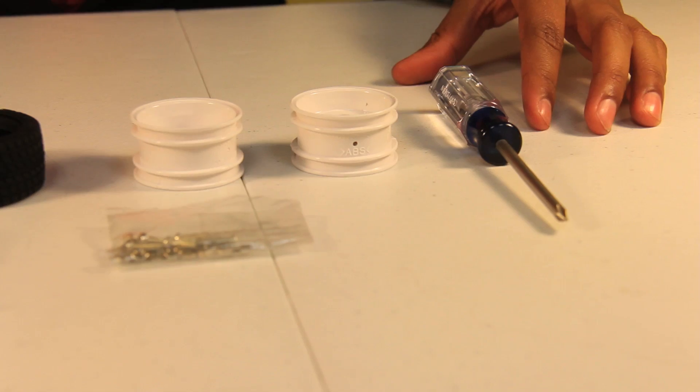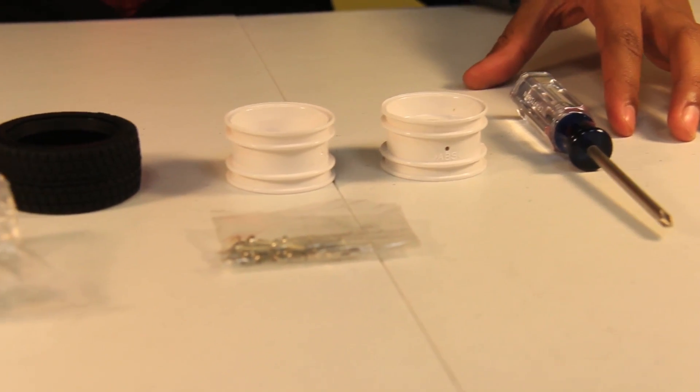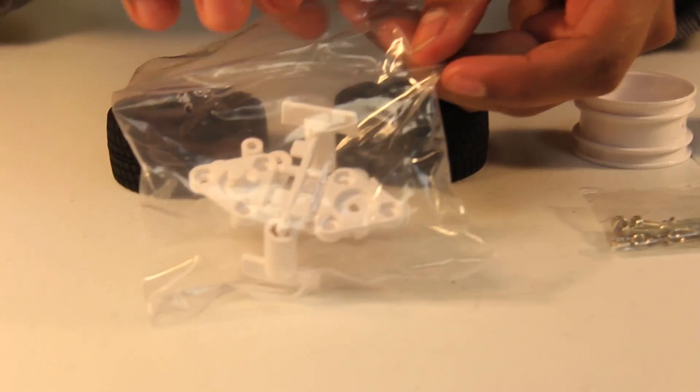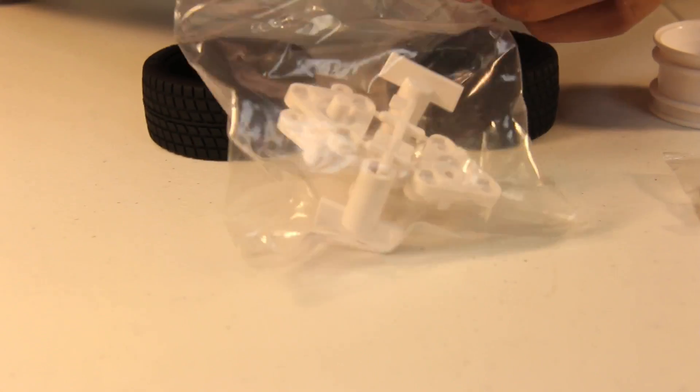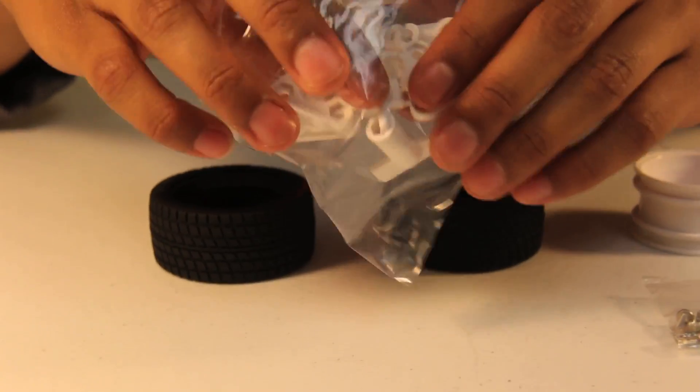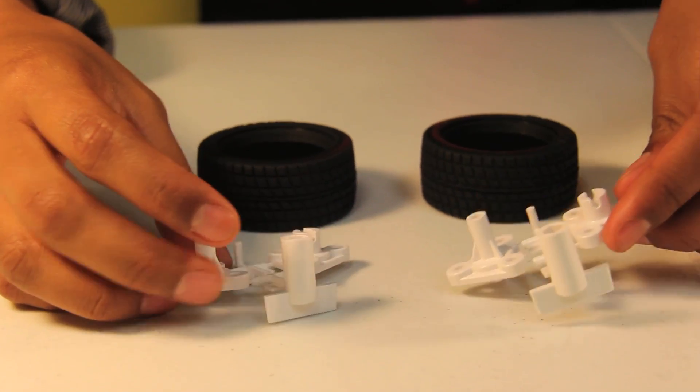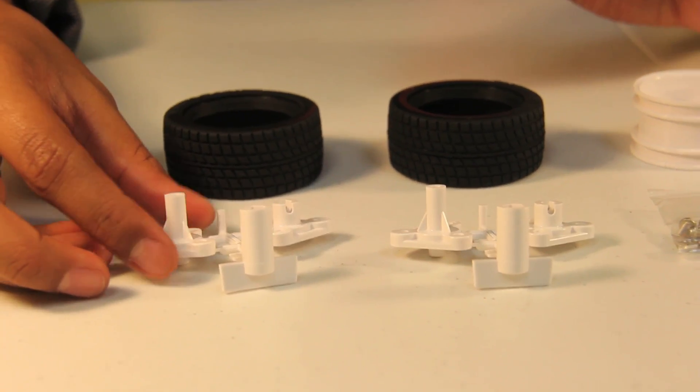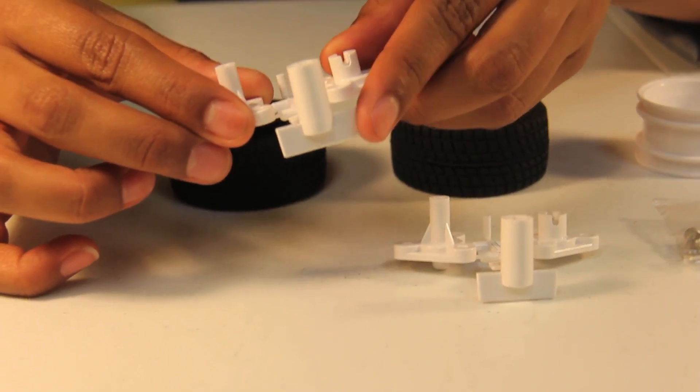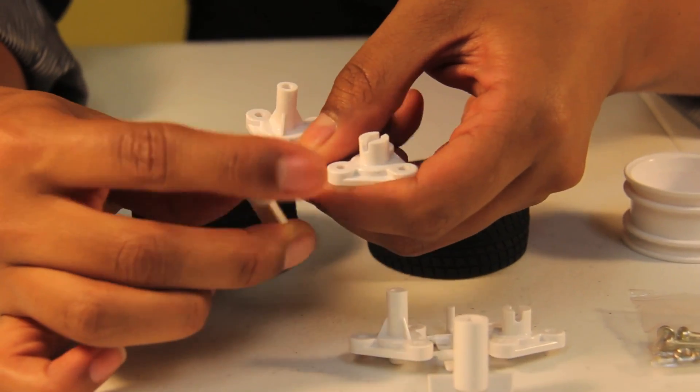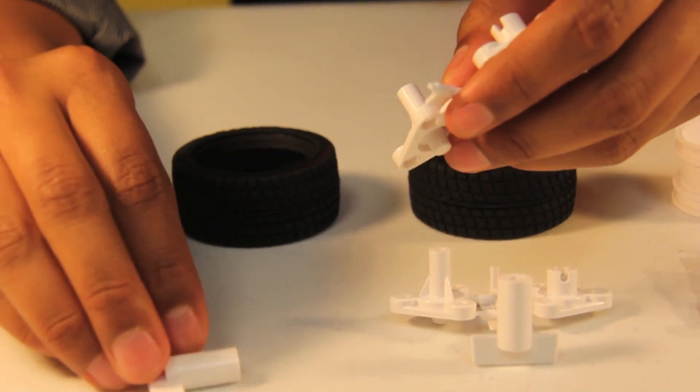The first thing we want to do is take out our wheel hubs from this plastic bag. When you take this out, you'll notice you have two parts. We are going to be using the tool, which is right here, and I'm just going to slowly twist it off and put it to the side.